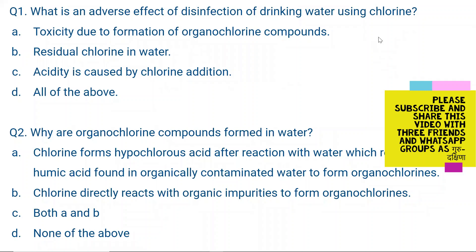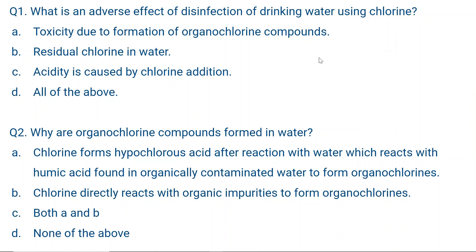Question number one: What is an adverse effect of disinfection of drinking water using chlorine? Option A: Toxicity due to formation of organochlorine compounds. This is right — when drinking water has organic impurities and you disinfect it with chlorine, organochlorine compounds are formed and those are toxic.